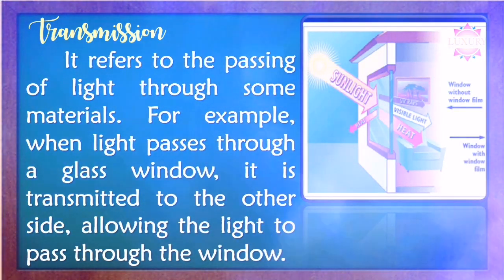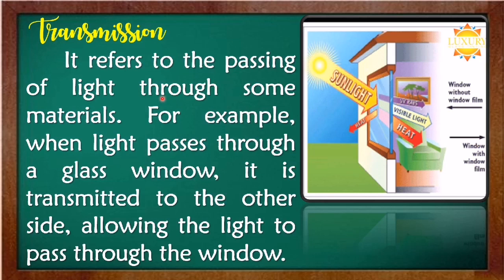Next is transmission. It refers to the passing of light through some materials. For example, when light passes through a glass window, it is transmitted to the other side, allowing the light to pass through. The sunlight passes through the window — the light passes through the glass window and it is transmitted to the other side. A clear window without window film is an example of this.